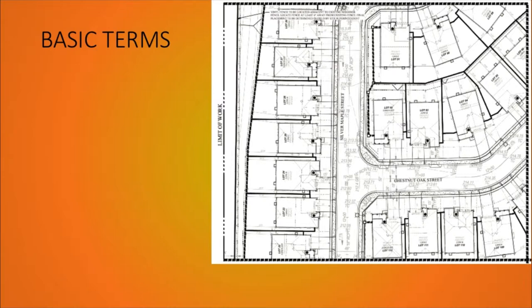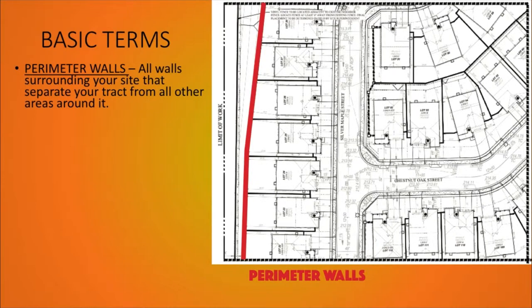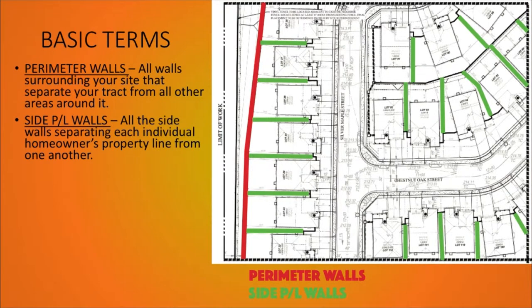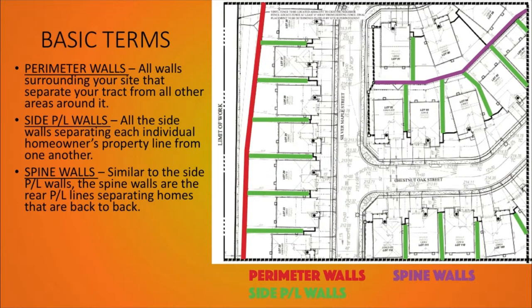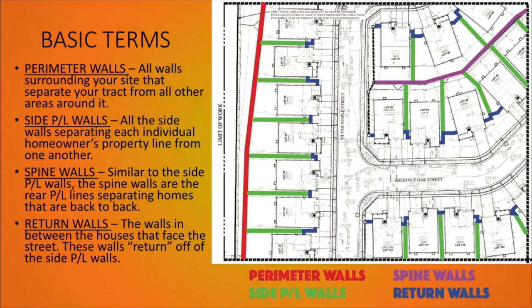Before we progress further, there are a couple of basic wall terms I want to introduce, specifically related to a wall's location and reference on the site. When communicating with a subcontractor or someone from the city, you need to be able to distinguish one wall from another. The first term is perimeter walls — all the walls surrounding your site separating your tract from surrounding areas. Second are side PL walls — sidewalls separating each individual homeowner's property line. Third are spine walls — similar to side PL walls but at rear property lines separating back-to-back homes. Return walls are walls between houses that face the street, returning off the side PL walls.